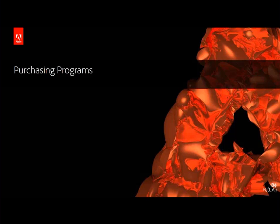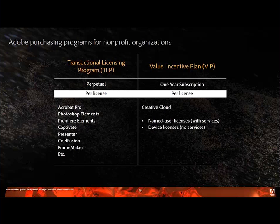For purchasing, Adobe offers two licensing vehicles for nonprofit customers. One is the Transactional Licensing Program, or TLP, which covers products like Acrobat Pro, Photoshop Elements, Premiere Elements, Captivate, and Presenter — still available through TLP Education Pricing. However, all creative products and Creative Cloud, as well as Acrobat, are now available through the Value Incentive Plan, or VIP.